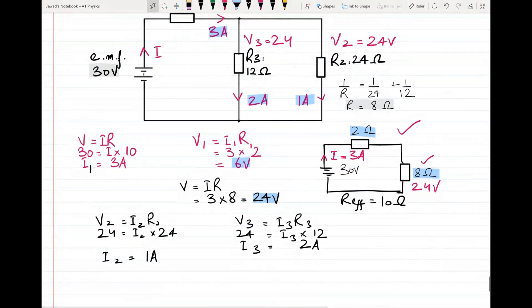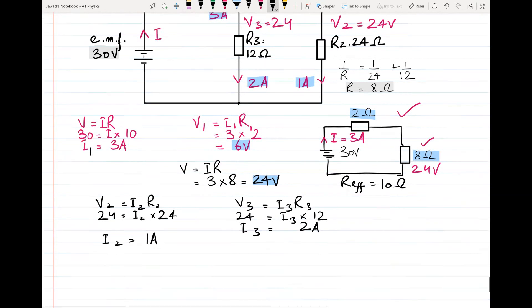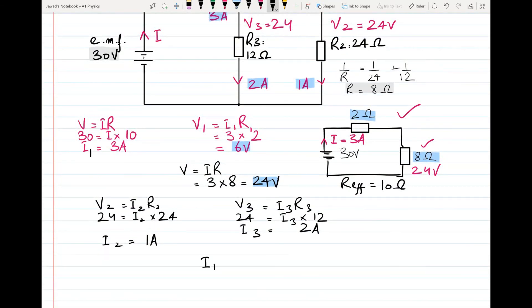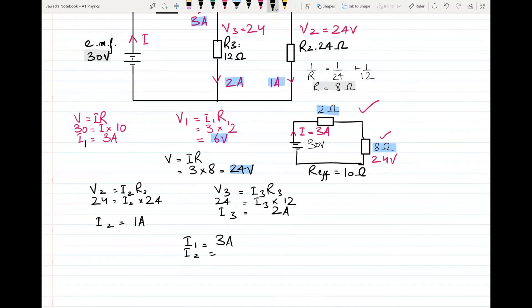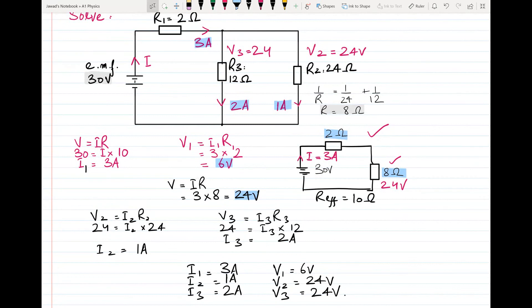Current in this circuit - what is the value of I1? 3 amperes. Value of I2? 1 ampere. Value of I3? 2 amperes. Value of V1? 6 volts. Value of V2? 24 volts. And value of V3 is equal to once again 24 volts. So this is how you solve a combination of series and parallel.